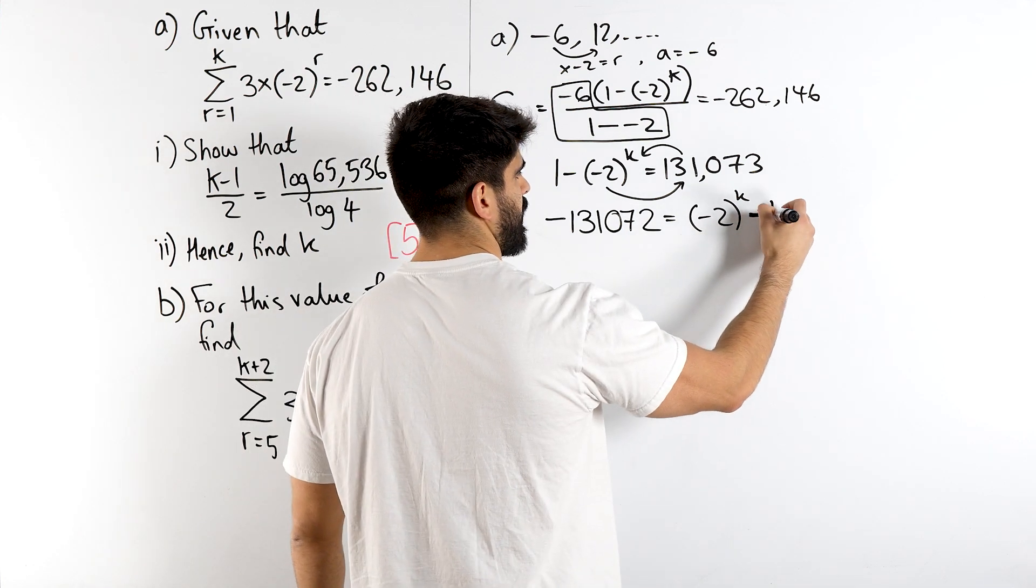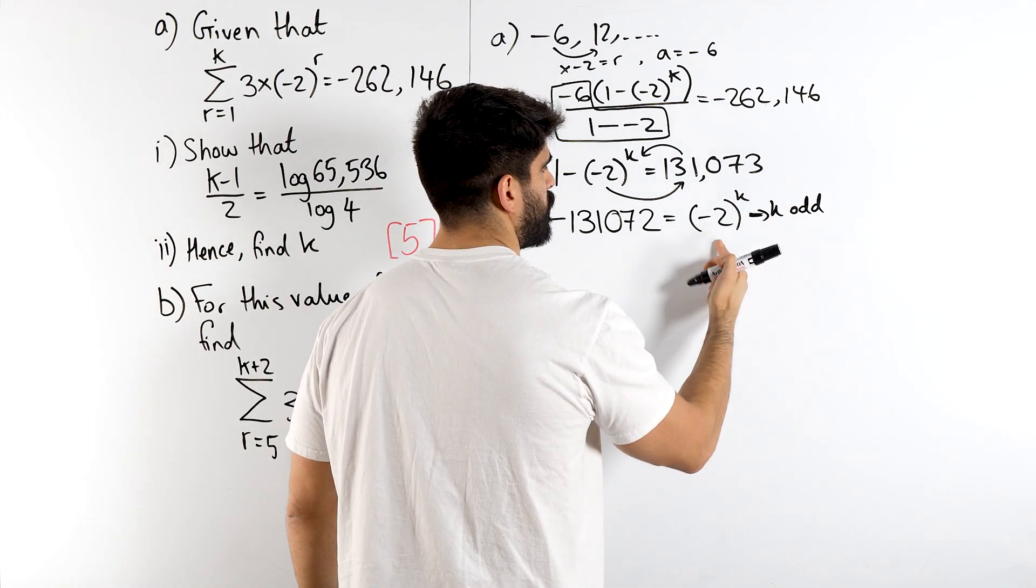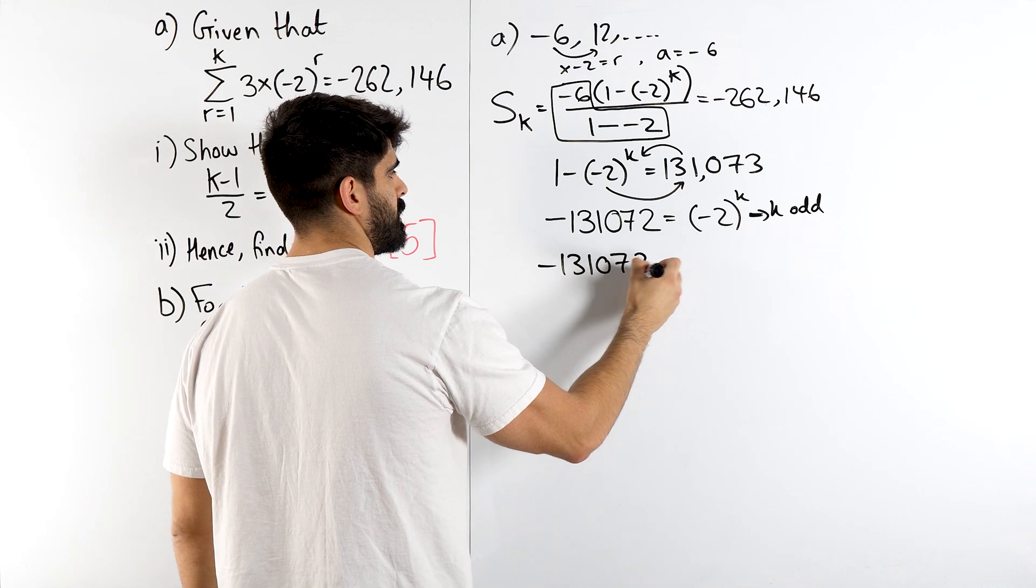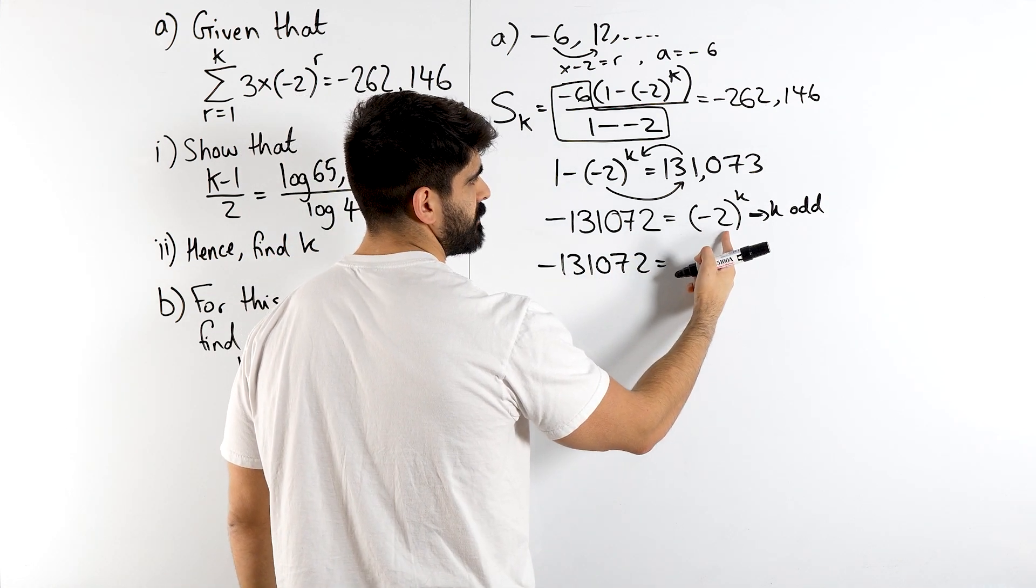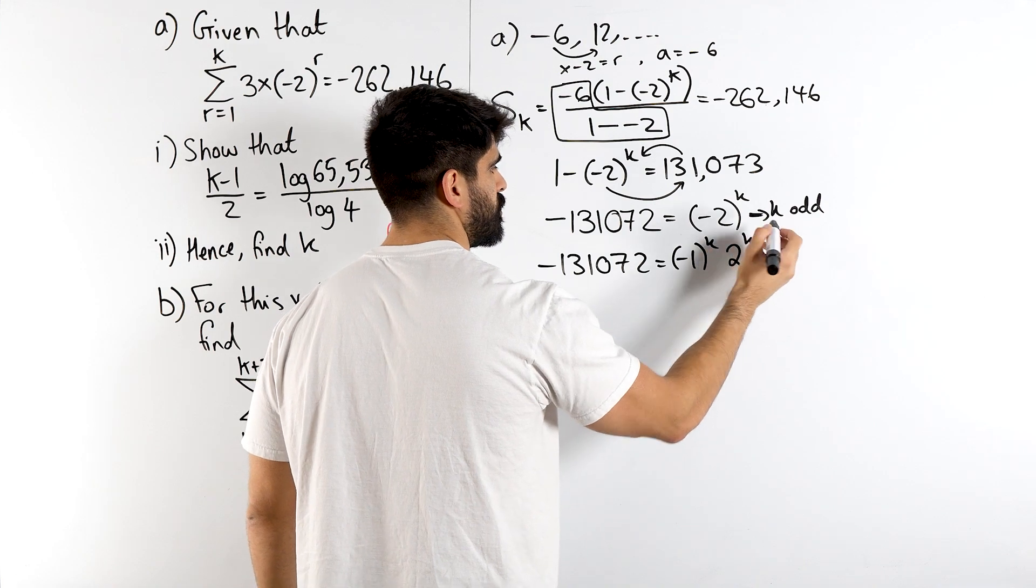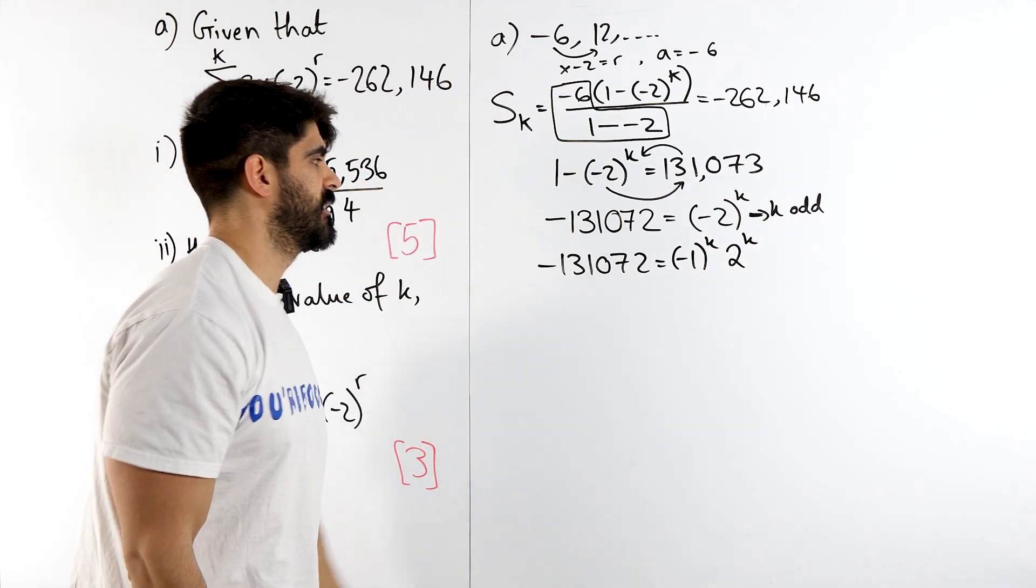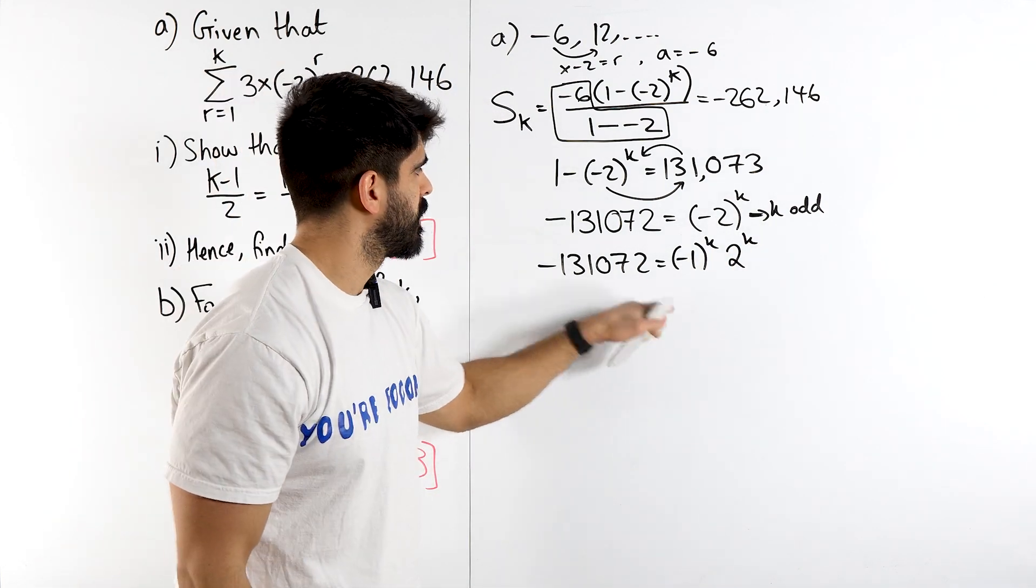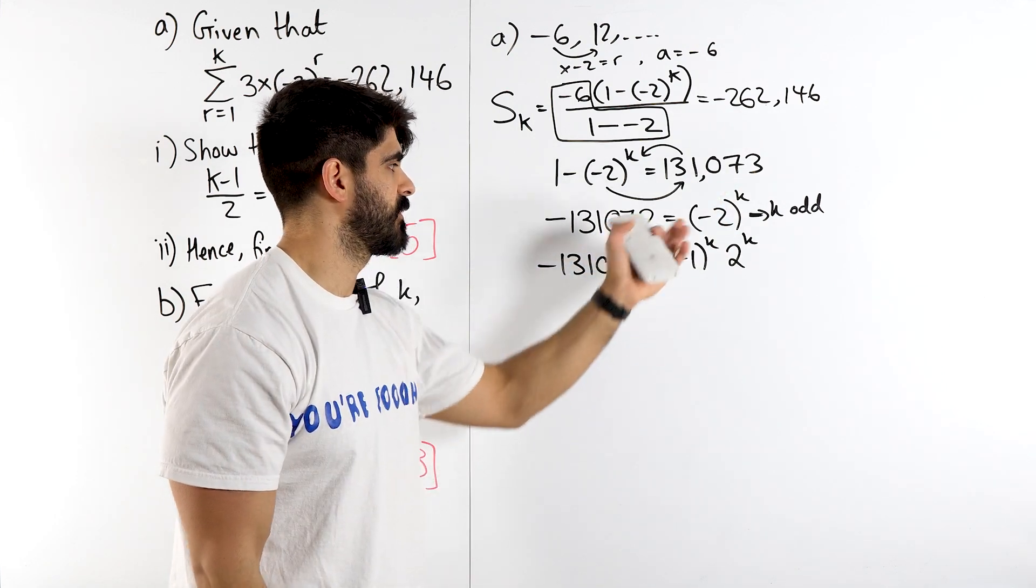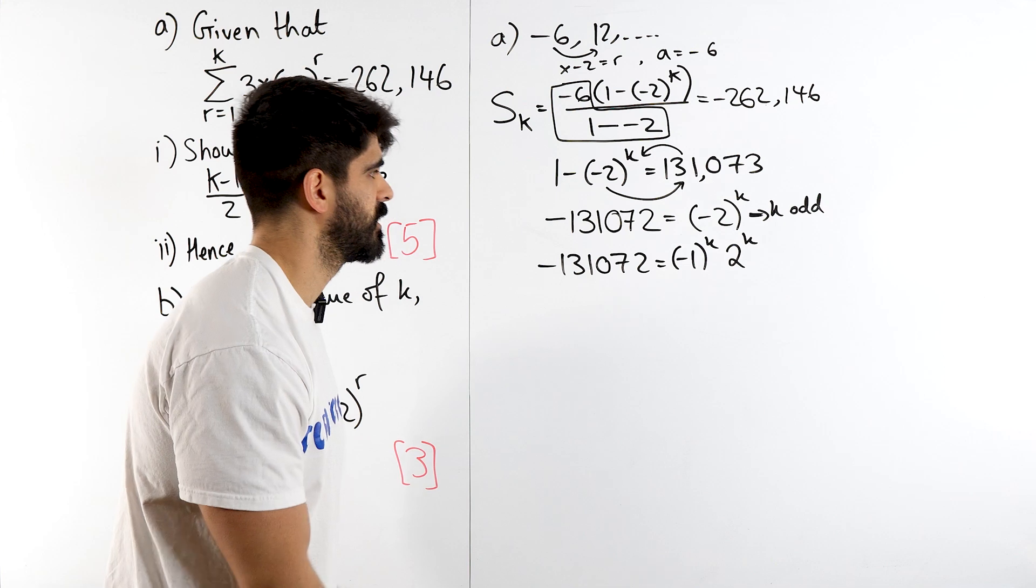So for this power to be negative, it must imply that k is odd. Now if k is odd, we can break this up. We can say this is minus 1 times 2, so we can break up as minus 1 to the power of k and then 2 to the power of k. Now this is like a more professional way of looking at it, or you could say 131,072 equals 2 to the power of k. We forget about the negative, I'm showing you guys what's going on here.